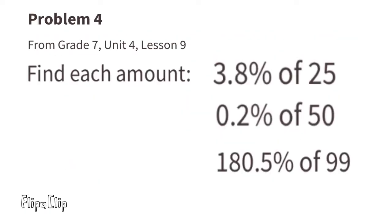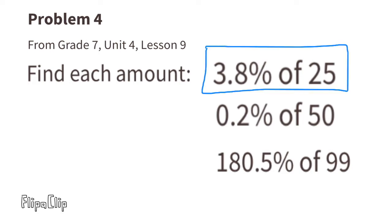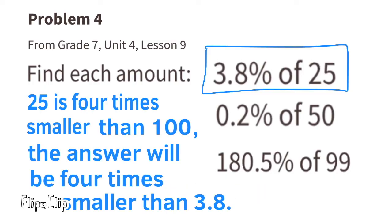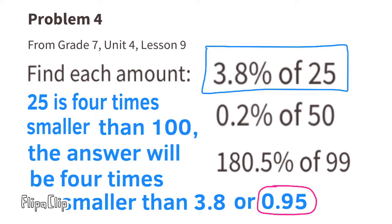Problem 4 (from Unit 4 Lesson 9): Find each amount. 3.8% of 25 — you could multiply 0.038 × 25, but since 25 is four times smaller than 100, the answer will be four times smaller than 3.8. So 3.8 ÷ 4 = 0.95. Therefore, 3.8% of 25 is 0.95 — the same answer you get multiplying 0.038 × 25.